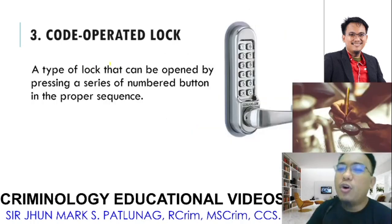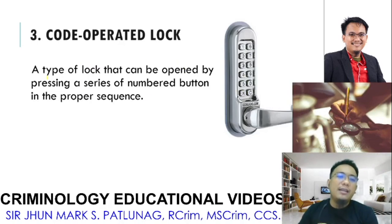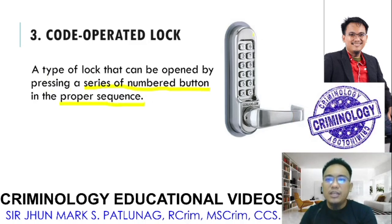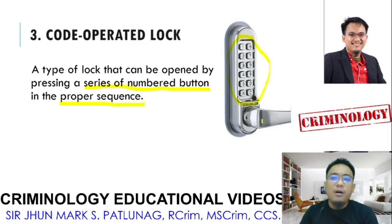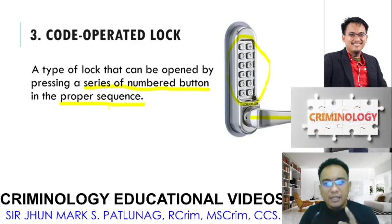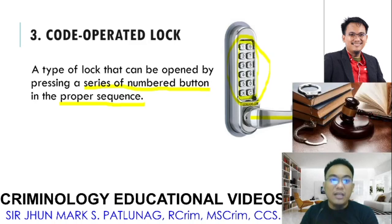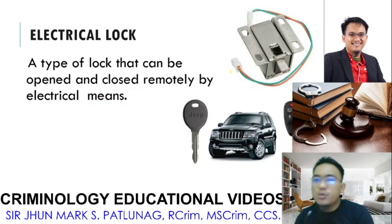Next is the code-operated lock. A code-operated lock is a type of lock that can be operated by pressing a series of number buttons in the proper secret sequence. Before you can open the knob or lever, you need to press the series of number buttons, and they must be entered in the proper sequence — the code cannot be entered in random order.